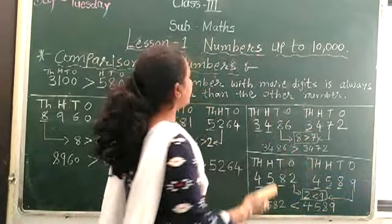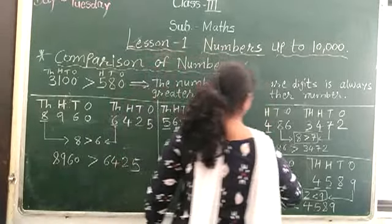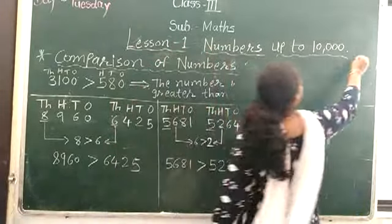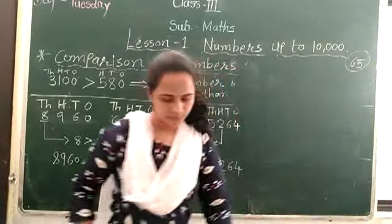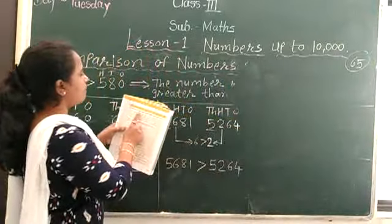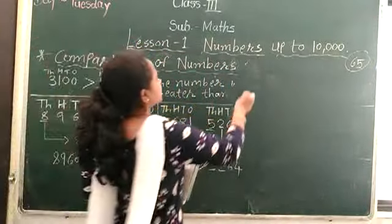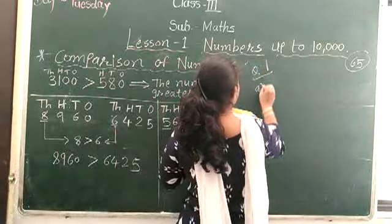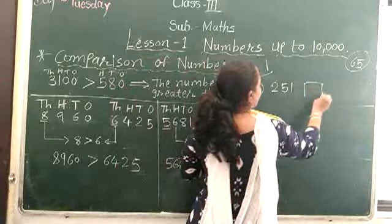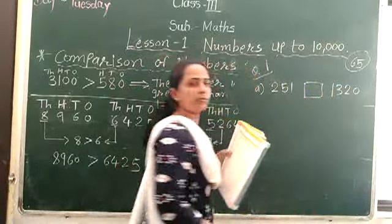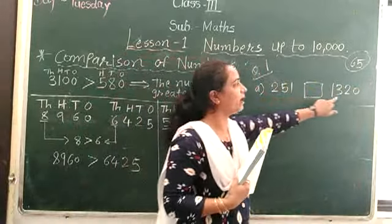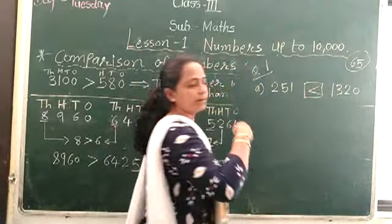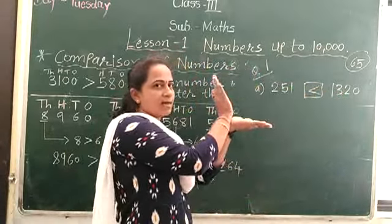Now look at here — page number 65. Open in your textbook, page number 65. Exercise 1.3: Compare the numbers and put the correct sign. Question 1: compare 251 and 1,320. Here 3 digits and here 4 digits — so which is greater? More digits is greater. Put the sign — the crocodile mouth opens toward the bigger side.